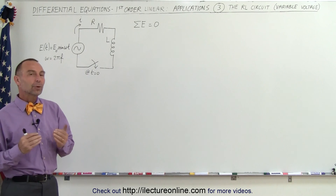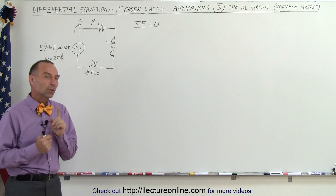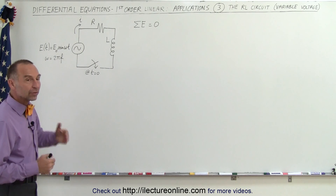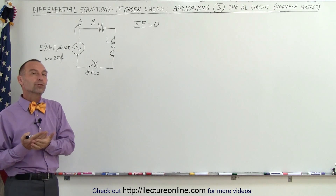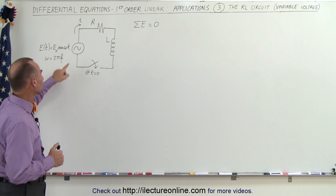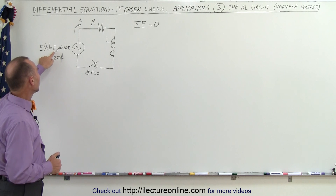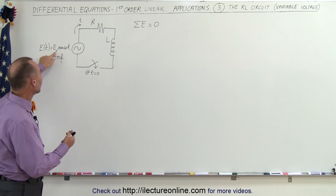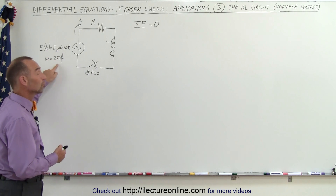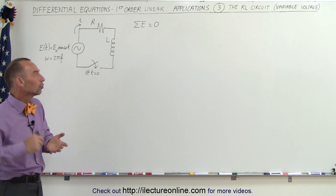Welcome to Electron Online. We're going to do an example that looks a lot like the previous example with one big difference: the voltage supply is no longer a steady-state voltage, but a sinusoidally varying voltage. It changes with time according to the equation E as a function of time equals the maximum voltage times the sine of omega t, where omega equals 2 pi f, f being the frequency of the voltage changes.